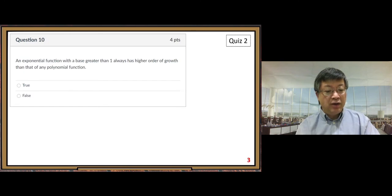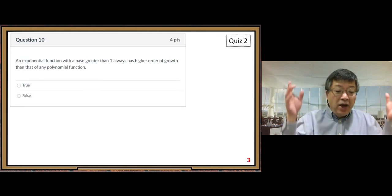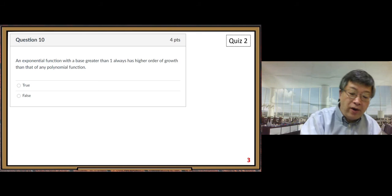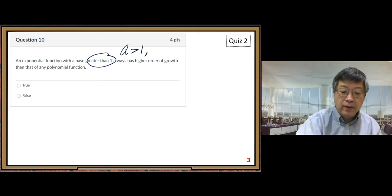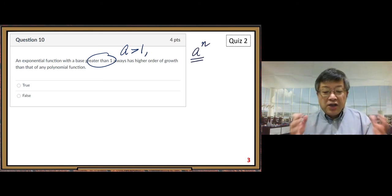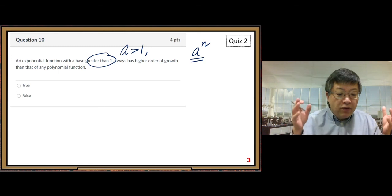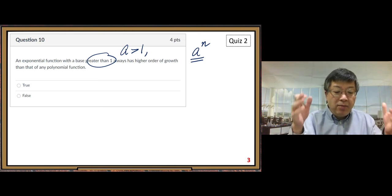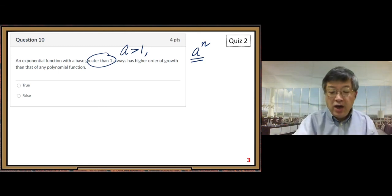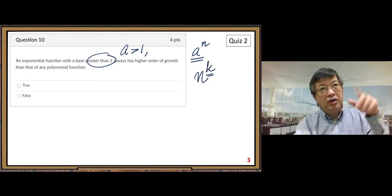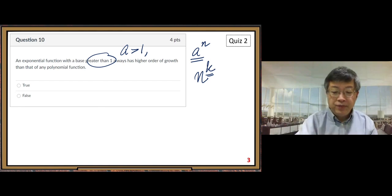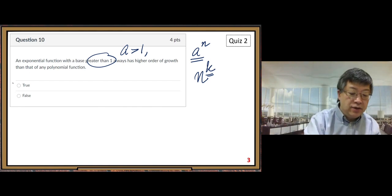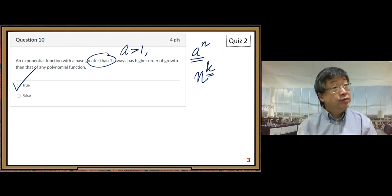All right. So the last question, number 10. An exponential function with base greater than 1—so a greater than 1—exponential function, we consider this. Has higher order of growth than that of any polynomial function. Any polynomial we can consider n to the k. K is constant, but could be a large number. And it is true.